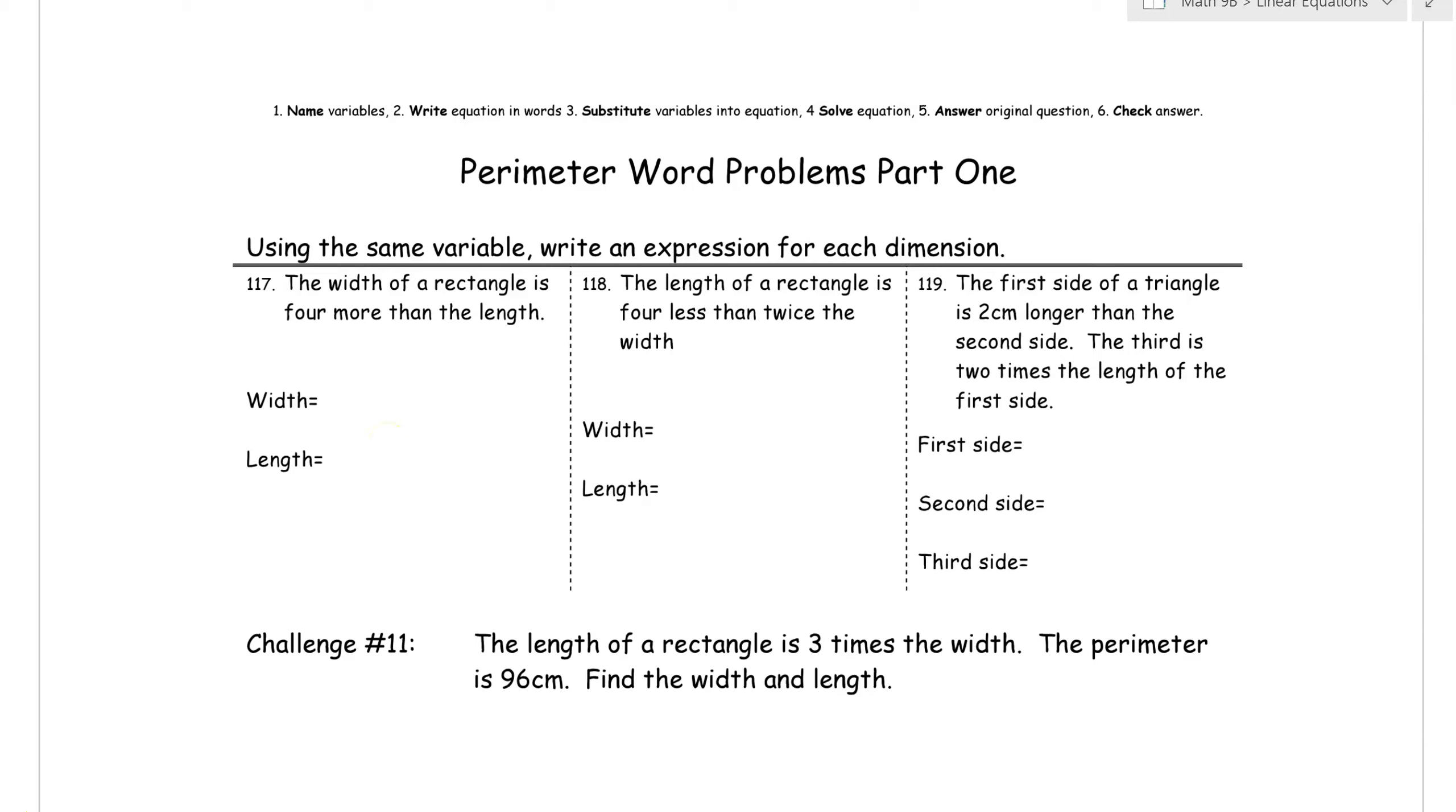So after reading each of these problems here, this would be L, and this would be L plus 4, and this would be your W, and this would be 2W minus 4. And for this one, this would be your S, this would be your S plus 2, and 2 in brackets S plus 2, because it's twice the first side. So we needed the brackets. Pat yourself. Congratulate yourself if you've done all these expressions correctly.